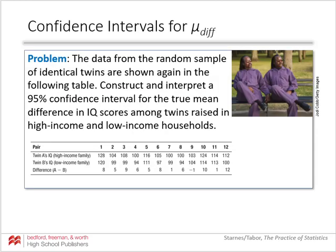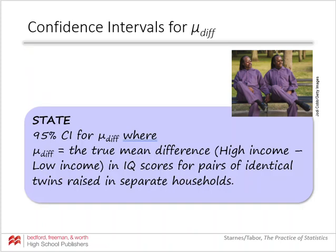Let's go back to the twin example. We want to construct and interpret a 95% confidence interval for the true mean difference in IQ scores among twins raised in high-income and low-income households. For the state step: we are doing a 95% confidence interval for μ_diff, where μ_diff is the true mean difference, high-income minus low-income, in IQ scores for pairs of identical twins raised in separate households. Always specify which direction you are doing your subtraction.